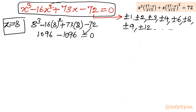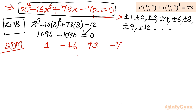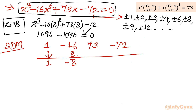Applying synthetic division to the cubic with x equals 8 and coefficients 1, minus 16, 73, minus 72: the process gives 1, minus 8, 9, 0. So the resulting quadratic equation is x² minus 8x plus 9 equals 0.